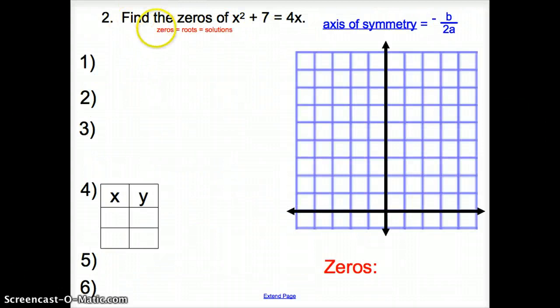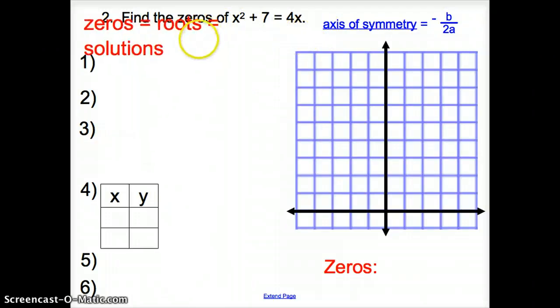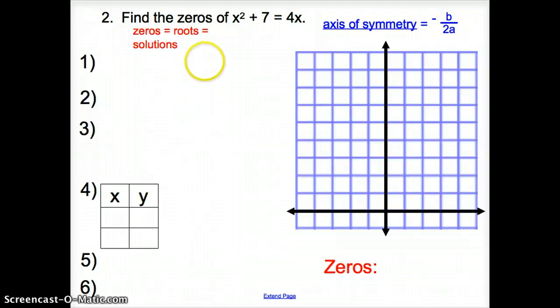Now we're asked to find the zeros of this equation. Well, what are the zeros? The zeros are the roots and the solutions. So it's exactly the same thing. Please make sure this goes in your notes: Zeros are the same thing as roots. Roots are the same thing as solutions. So if it asks you to find the roots, you would be finding the zeros or the solutions, and vice versa.